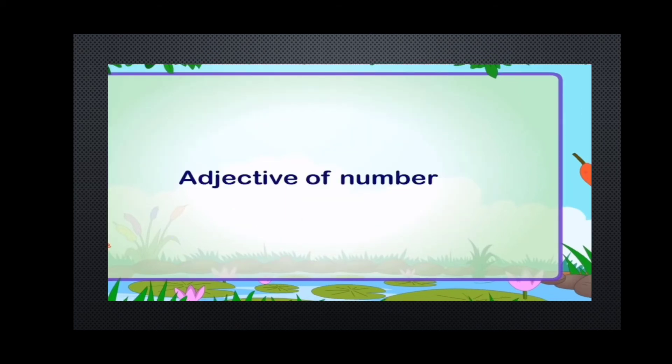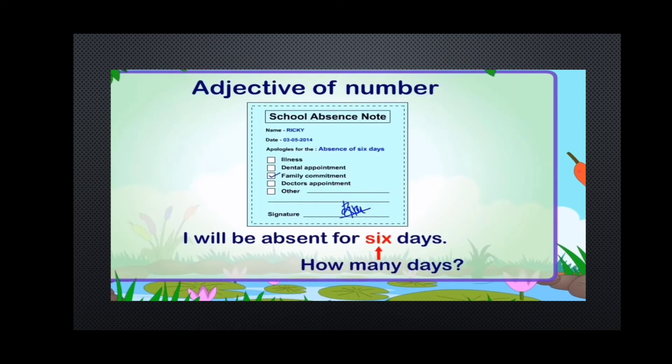The next is adjective of number. An adjective of number expresses the number of a person or thing. For example: I will be absent for six days — how many days? Six. Adjectives of number are of three kinds: definite numeral adjective, indefinite numeral adjective, and descriptive numeral adjective.